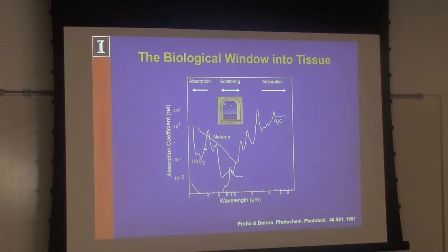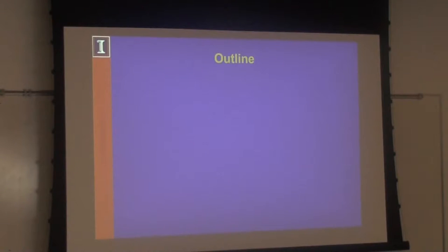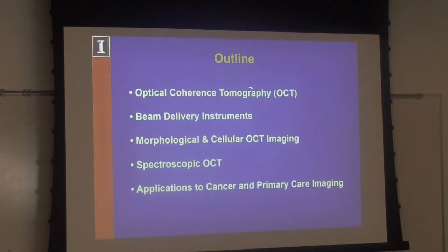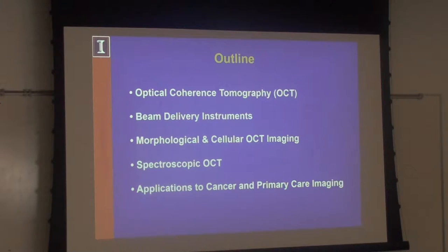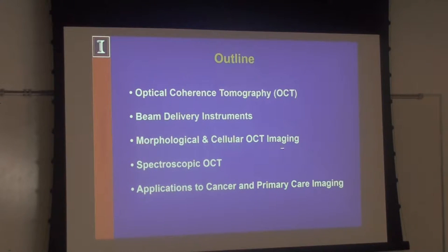Today we can break this down into five sections: background and theory of OCT, engineering these instruments because we have a fairly limited depth of imaging and have to get light to the tissue, morphological cellular imaging, spectroscopic OCT, and then applications to cancer and primary care.